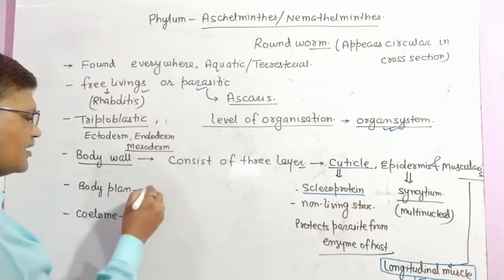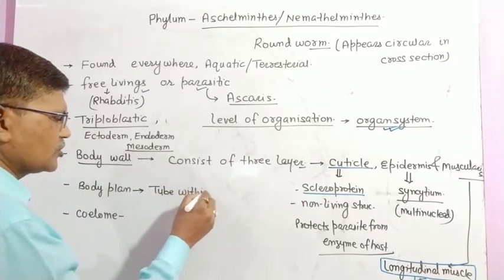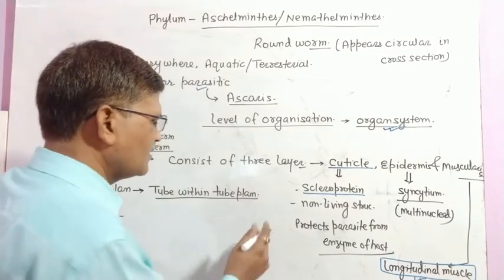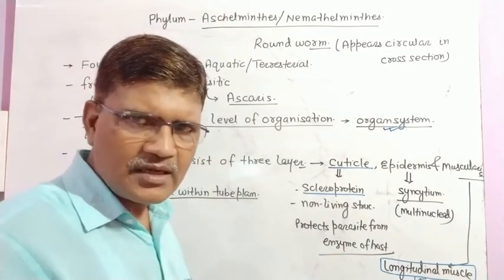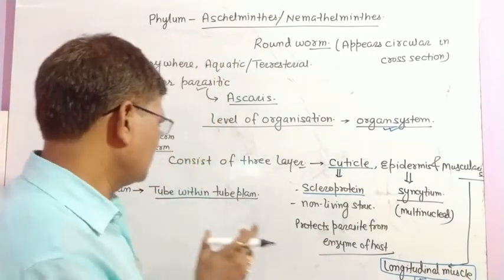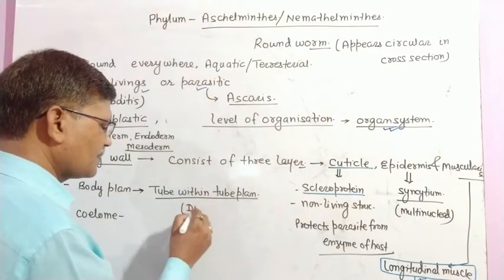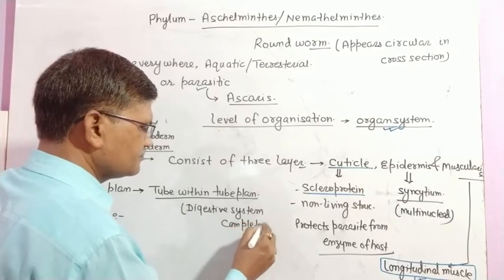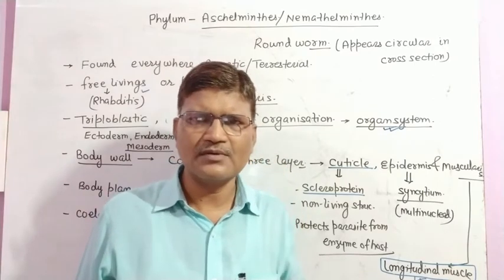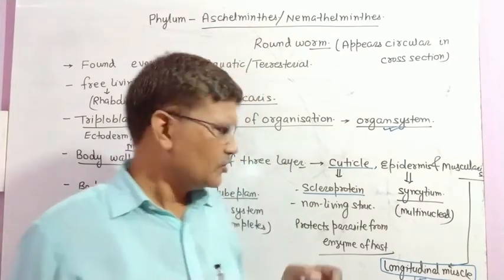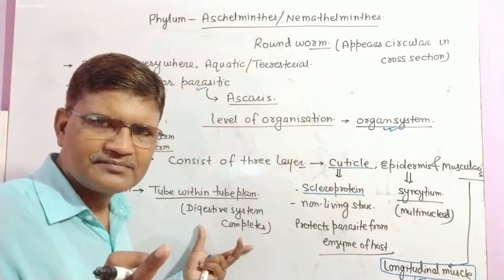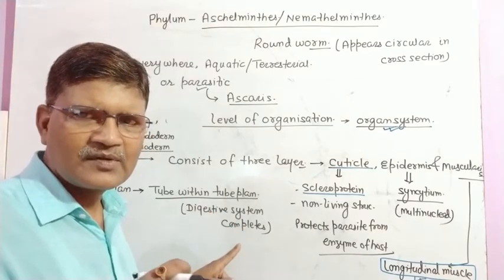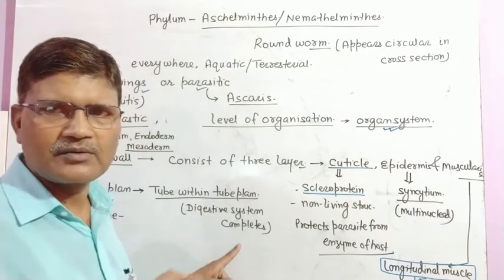The body plan is tube-within-tube plan. This means the alimentary canal or digestive tract is complete — the digestive system opens outside the body through two pores: mouth and anus. Nemathelminths is the first phylum in which a complete digestive system is present. In all previous phyla the body plan was a blind sac body plan.